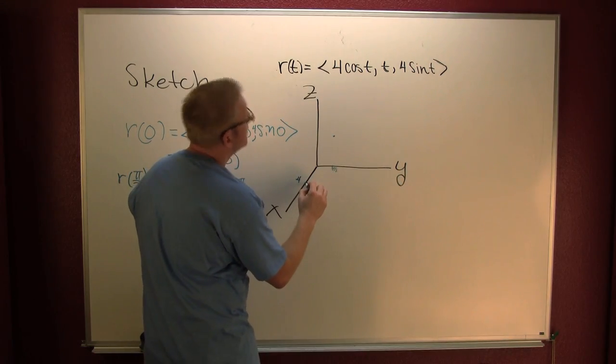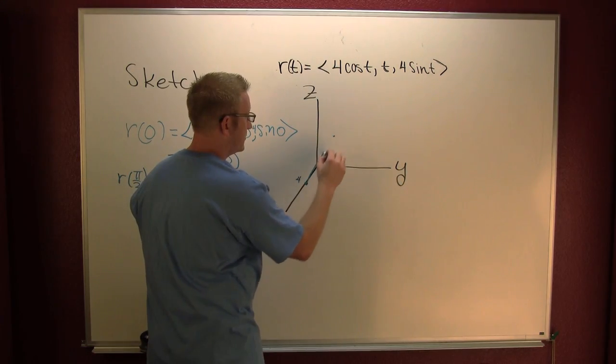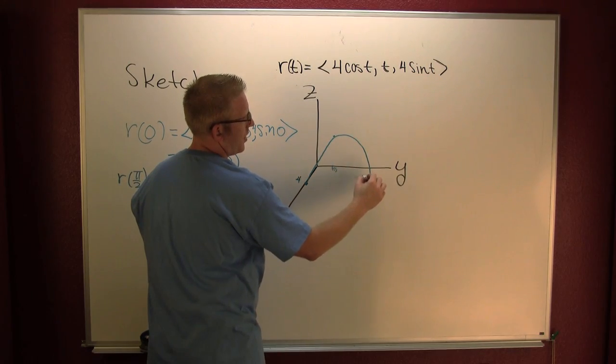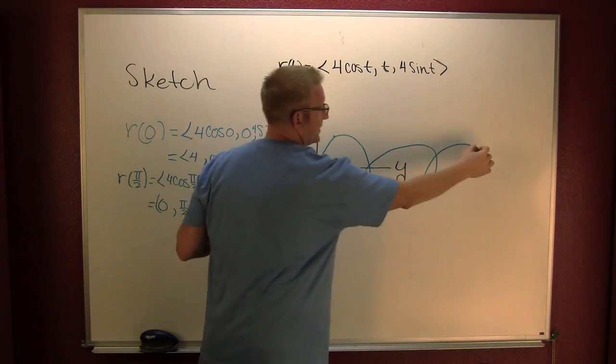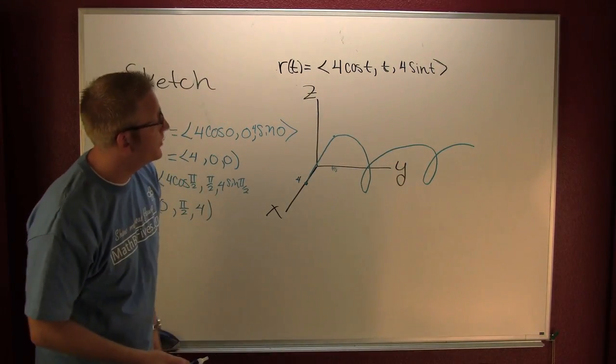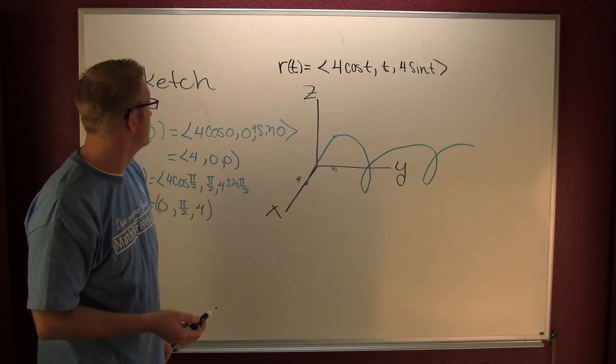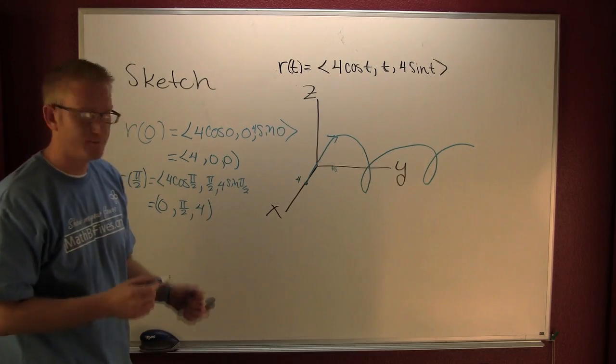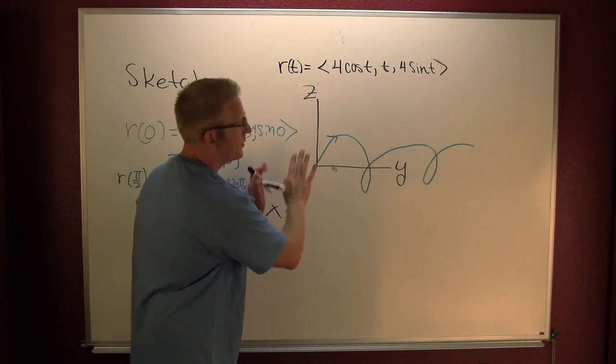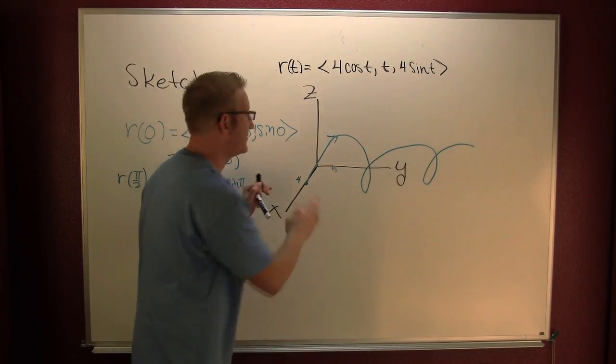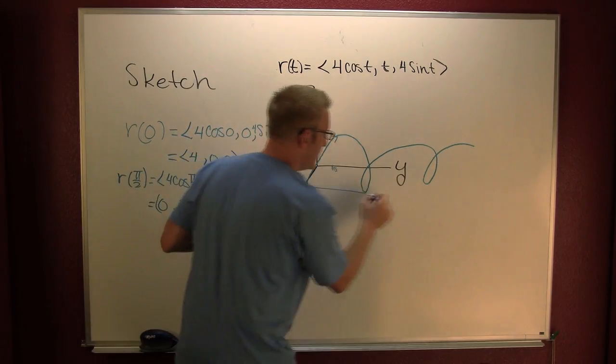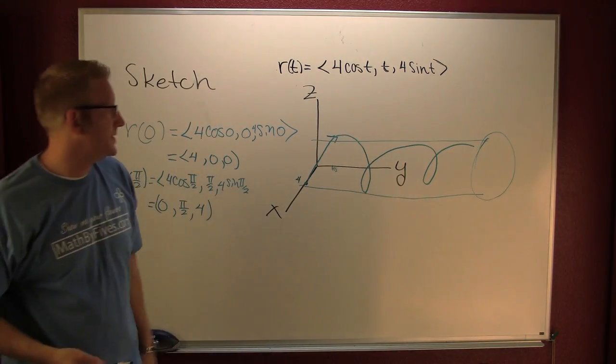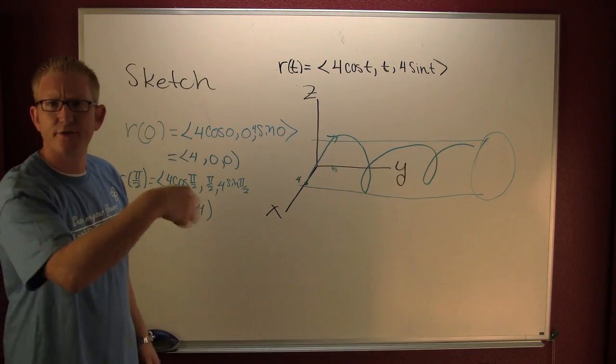So we see our spiral is going like this. Easy. And when you do these sketches, you need to include your orientation. And, of course, it doesn't loop over because it's all 3D and stuff. Okay. So you're going to see it's going to be traveling along a cylinder whose radius is 4. On the outside, of course.